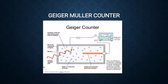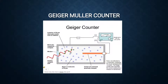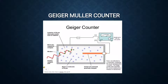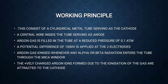The argon gas gets ionized whenever any alpha or beta particles enter the tube through the mica window. The positively charged argon ions formed are attracted to the cathode and the negatively charged electrons are attracted to the anode, producing an electrical pulse. These electrical pulses are counted by an automatic counter, and the intensity of radioactivity is found by measuring the number of pulses per minute.